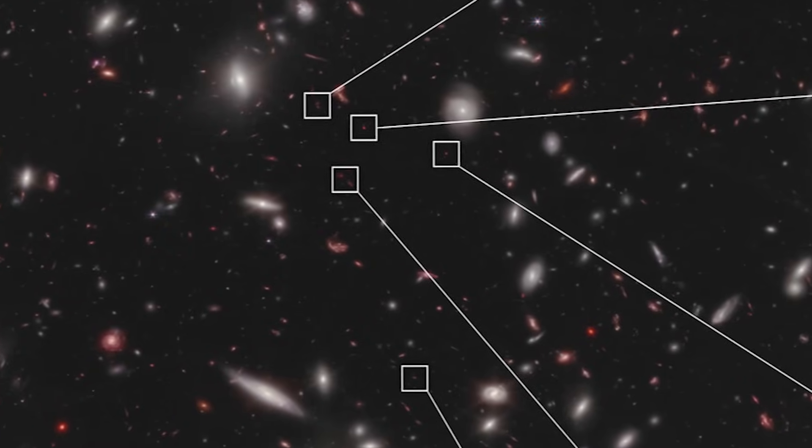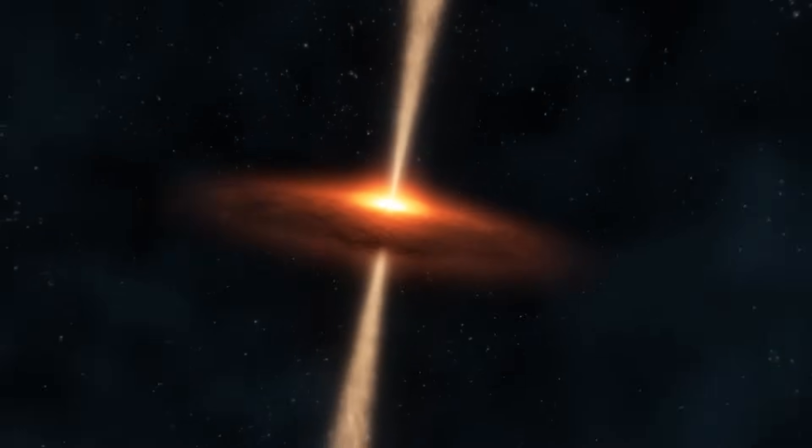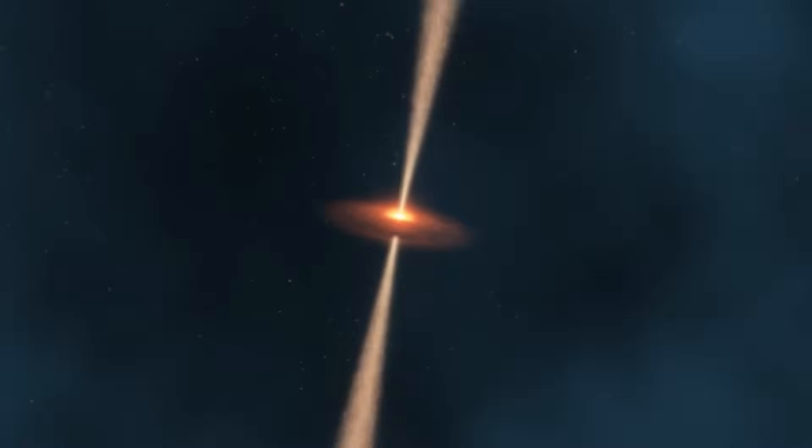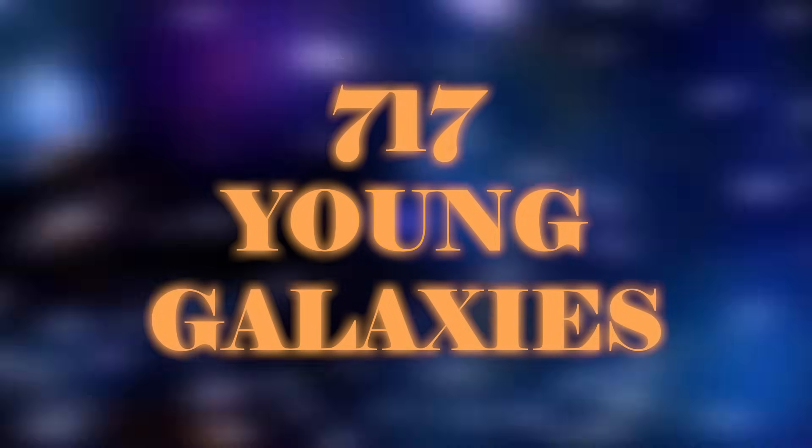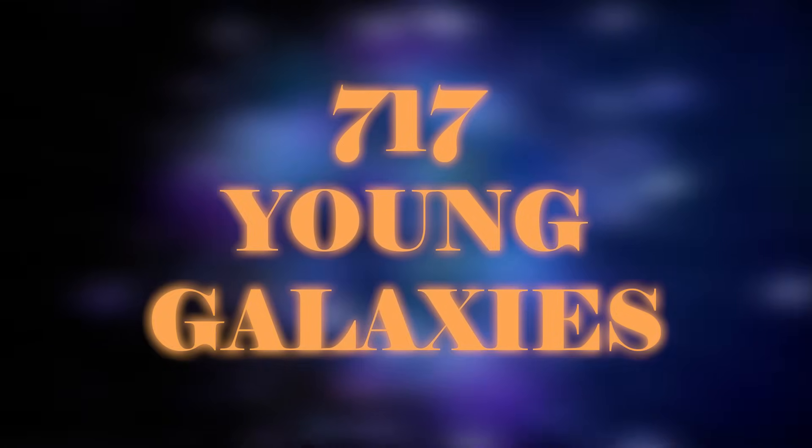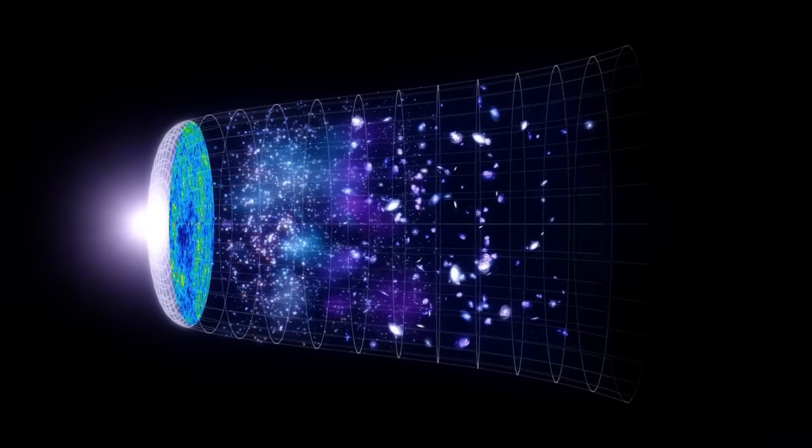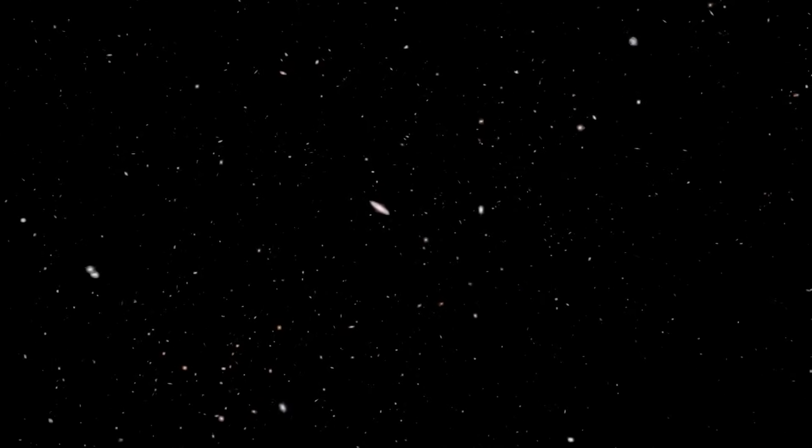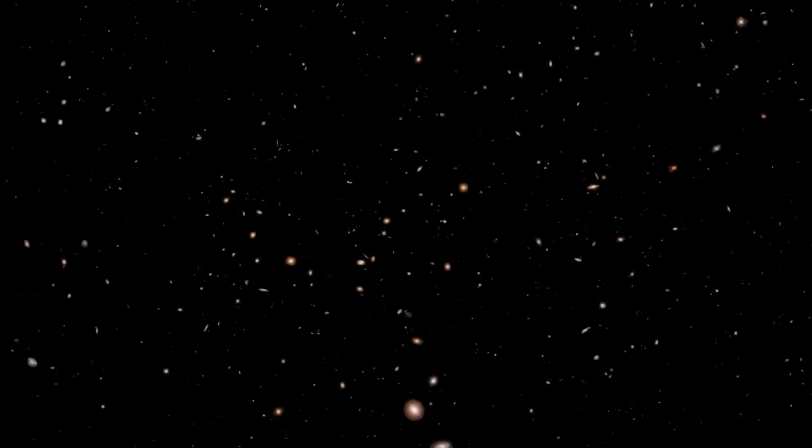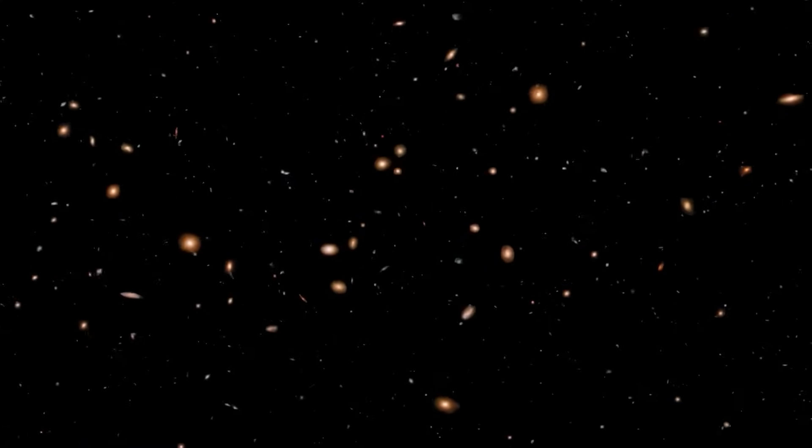And here comes the really mind-blowing part. During what we can call the first five minutes of life in the universe, when the universe was between 370 and 650 million years old, the team identified a staggering 717 of these young galaxies. Now, this number exceeded scientists' previous predictions. Let us pause for a moment and reflect. We're talking about more than 700 galaxies when the universe was still in its cosmic cradle. It's as if a handful of elementary school children suddenly multiplied into an entire school district overnight. But wait, there's more.